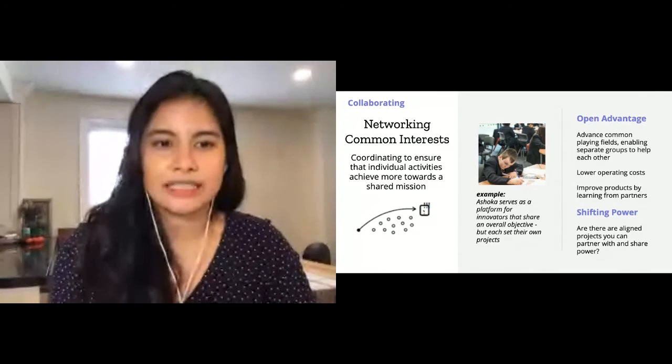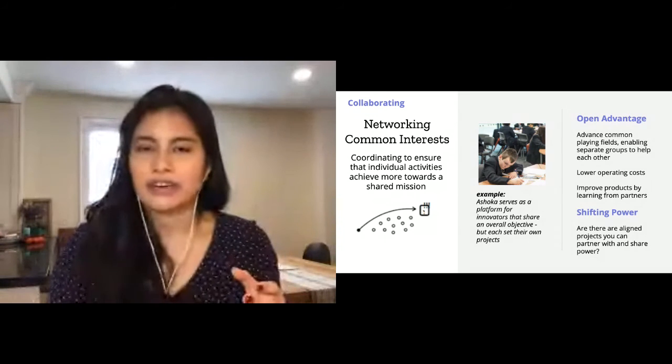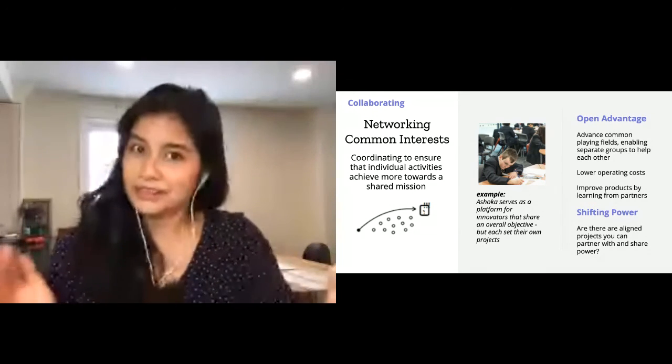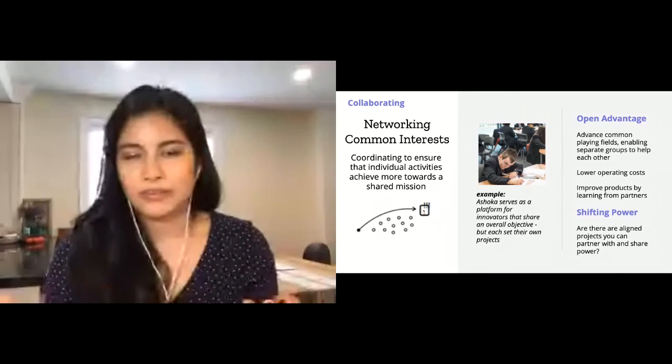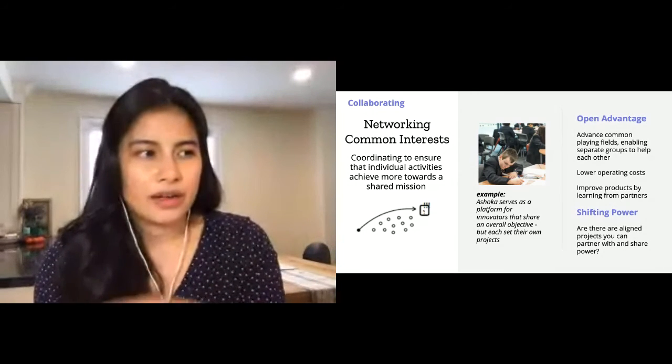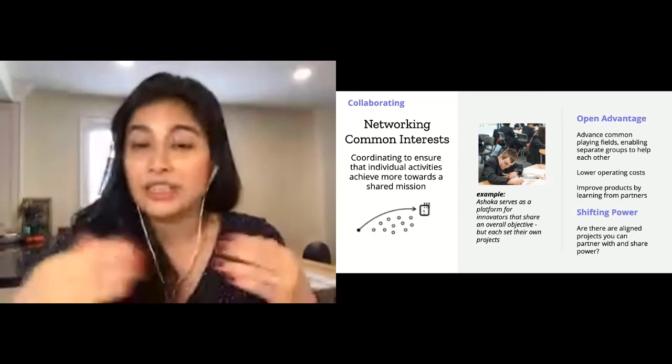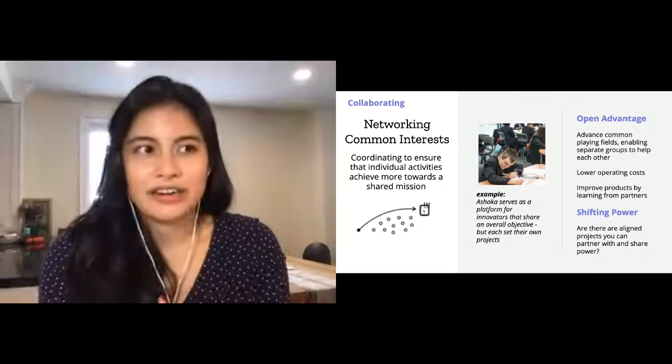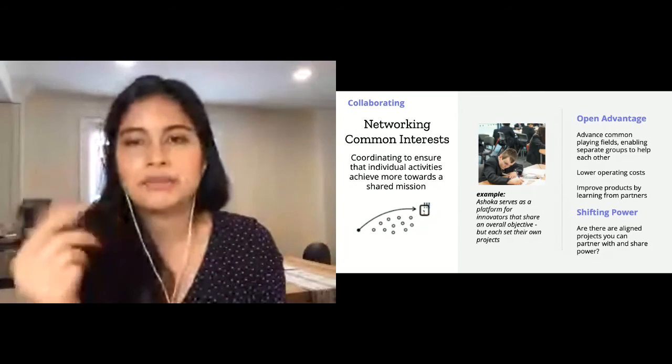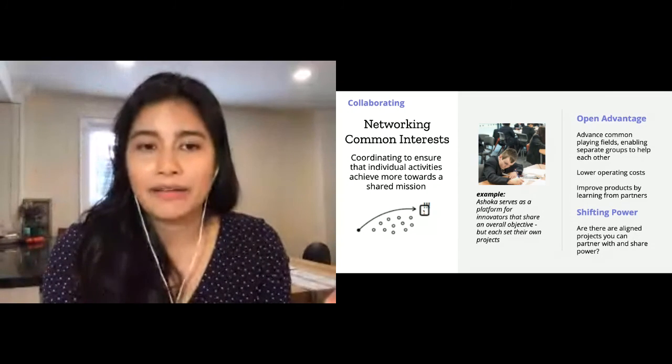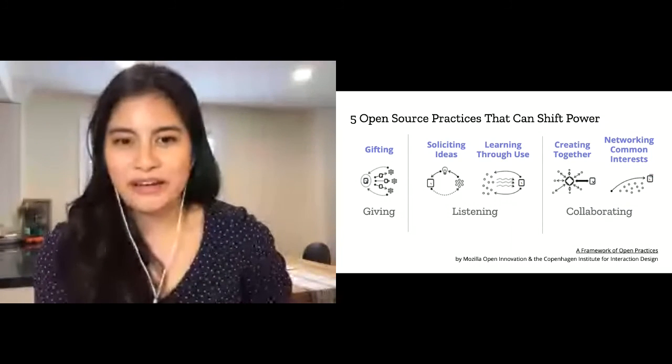This last one is around networking common interests—coordinating to ensure that individual activities achieve more towards a shared mission. Instead of just a project creating together, it's like many projects that have a shared interest, sort of seeing their aligned potential and then working together. I sort of like Galaxy and BOSC just seeing that you have this shared goal and what can you do to do things together and learn from each other. The example in the study was around Ashoka, which is a platform for innovators that share an overall objective but each has their own different projects. The open advantage: you advance the common playing field by working together. Separate groups can help each other, lowering operating costs, and you can improve products by learning from partners. In terms of shifting power, this one's maybe more sharing power, but are there aligned projects you can partner with and share power and really lift each other up?